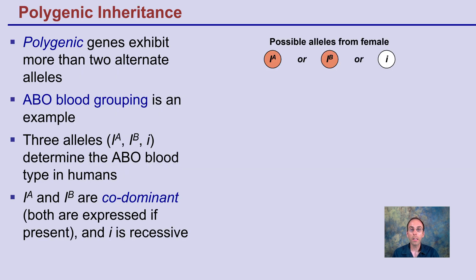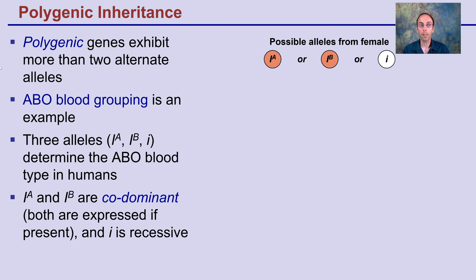Polygenic inheritance is very important when looking at blood type. ABO blood grouping is an example of more than two alternate alleles existing for a gene. The possible alleles from the female parent are A, B, or O blood type. A and B can be co-dominant if both are present, while I — representing O blood type — is recessive.